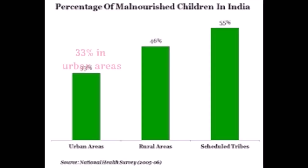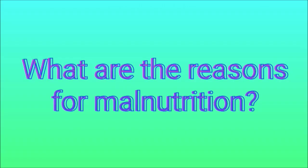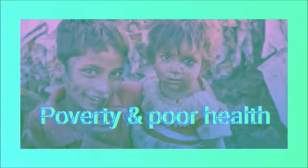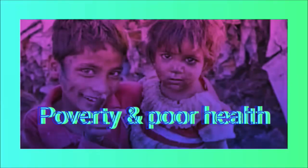In India, malnutrition is calculated as 33% in urban areas, 46% in rural areas, and 55% in tribal areas.